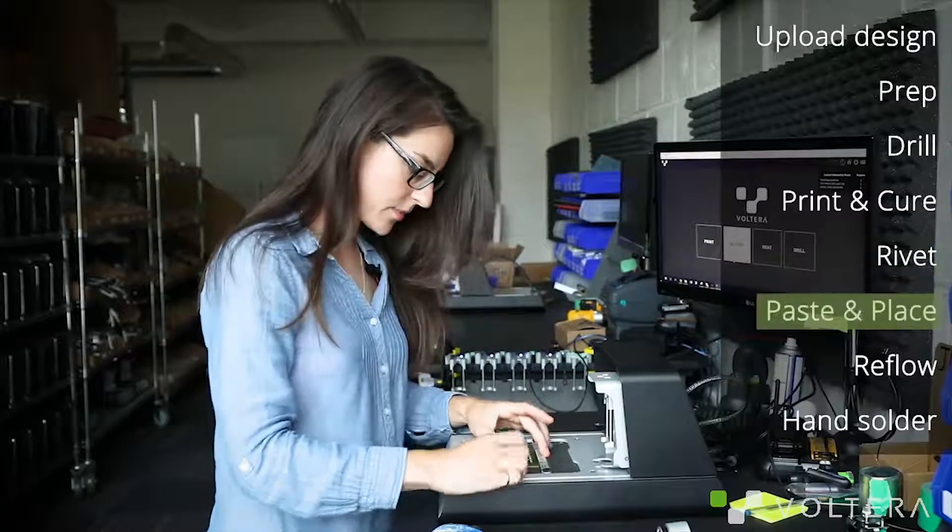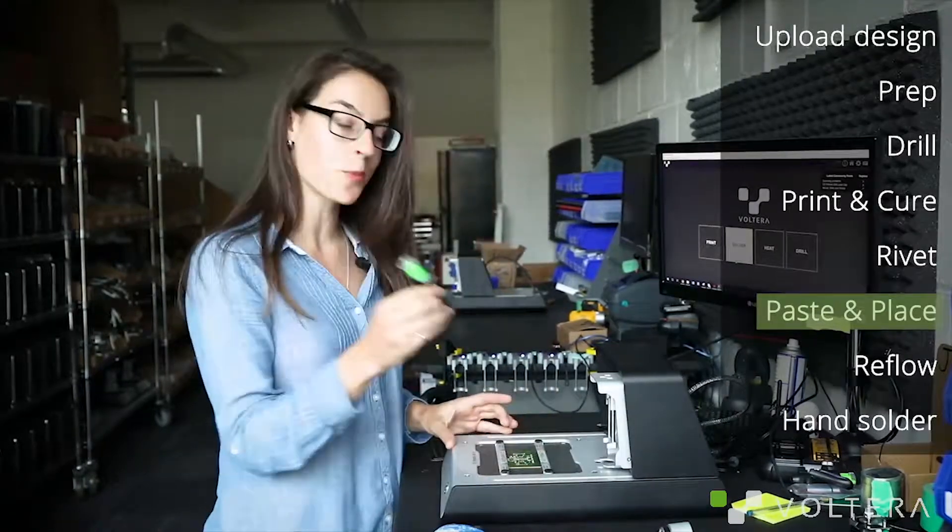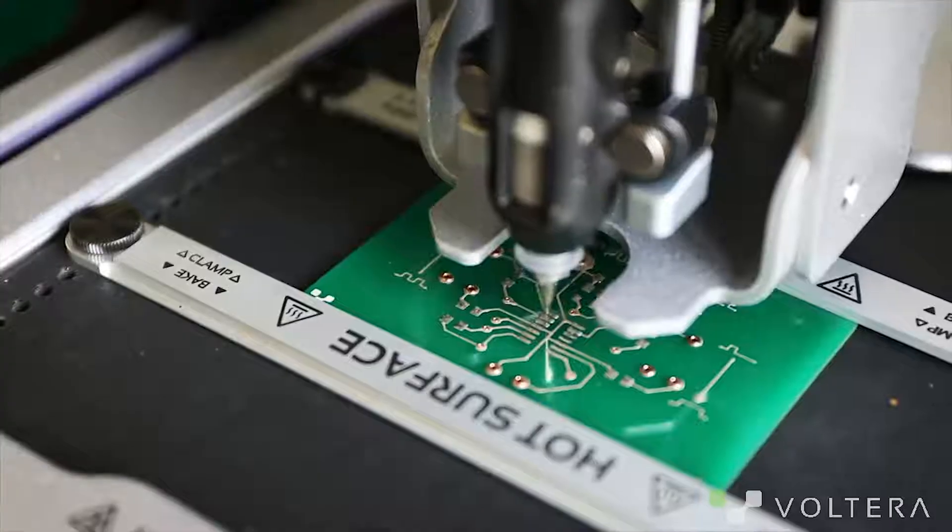With that done, we can clamp the board back onto the printer and snap in the solder paste dispensers so that we can get some solder onto these pads.